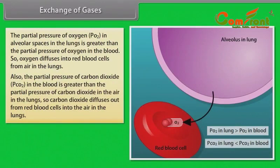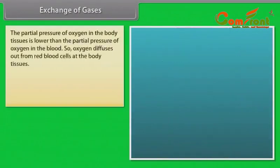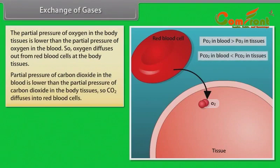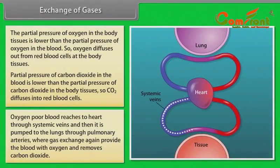The partial pressure of carbon dioxide in red blood cells is greater than its partial pressure in the air in the lungs, so carbon dioxide diffuses out from red blood cells into the air in the lungs. Oxygen-rich blood reaches the heart via pulmonary veins and is then pumped to the body through systemic arteries. The partial pressure of oxygen in body tissues is lower than in the blood, so oxygen diffuses out from red blood cells at the body tissues. The partial pressure of carbon dioxide in the blood is lower than in body tissues, so CO2 diffuses into red blood cells. Oxygen-poor blood reaches the heart through systemic veins and is then pumped to the lungs through pulmonary arteries, where gas exchange again provides the blood with oxygen and removes carbon dioxide.